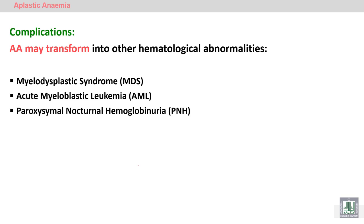Aplastic anemia is not stable; it will transform into other diseases or disorders, like a pre-leukemic condition called MDS or myelodysplastic syndrome, or a leukemic condition like AML, or another stem cell defect called PNH — paroxysmal nocturnal hemoglobinuria.